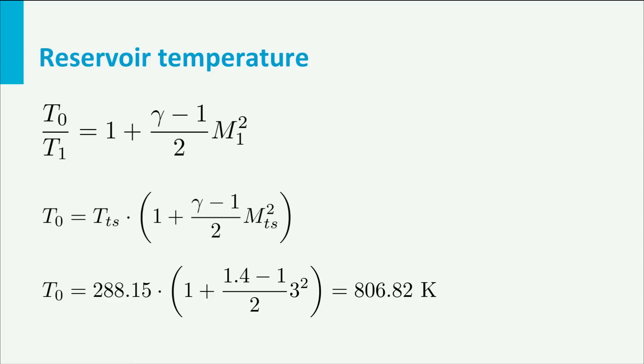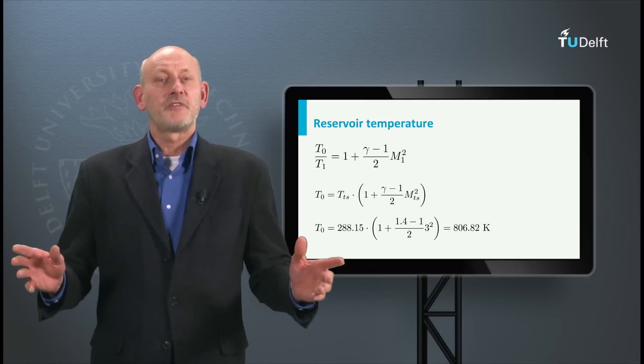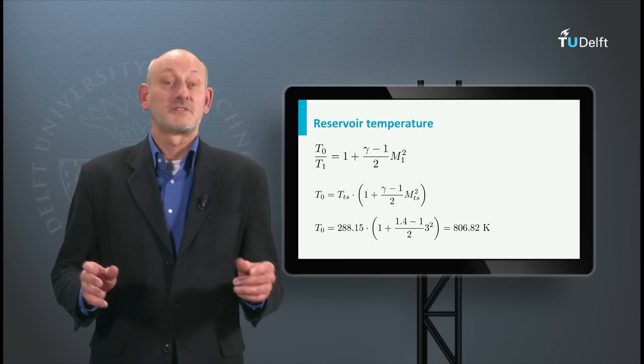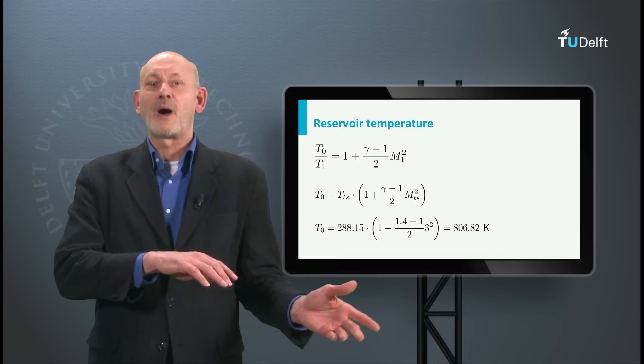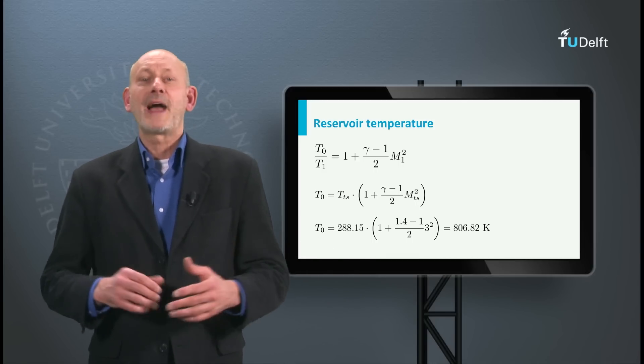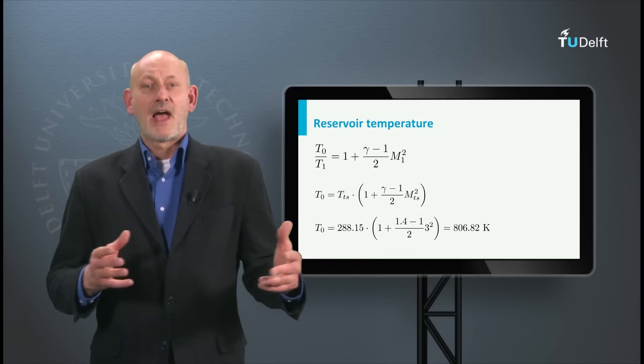Let's move on to C: the flow speed in the test section. We can solve it in two ways, either using the energy equation which contains velocities between the reservoir and the test section, or using the fact that we already know the Mach number in the test section. We will do the latter.